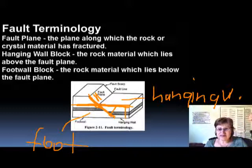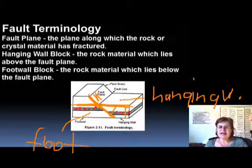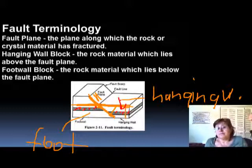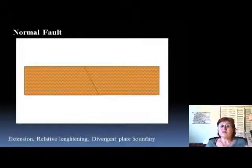The next thing is to decide which way the hanging wall went. For that, you have to find a rock layer. I'll change the color of my pen so you're not confused. We can pick this layer here — in red — and this is exactly the same layer on the other side of the fault line. The hanging wall actually went down. This is the type of fault we're going to talk about now: the normal fault.